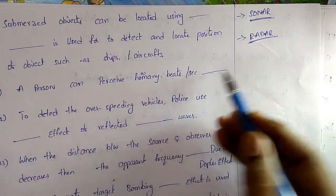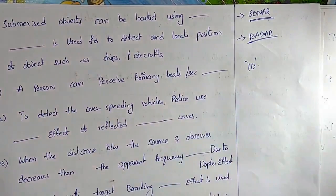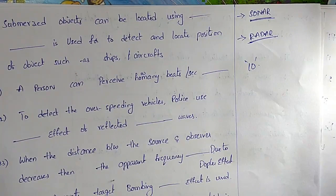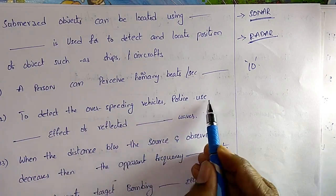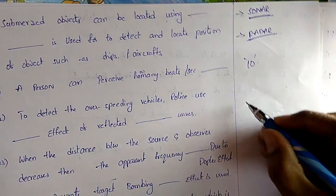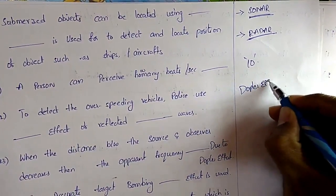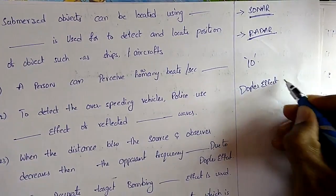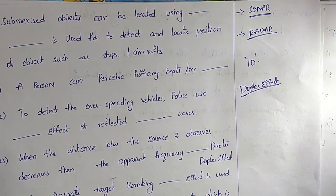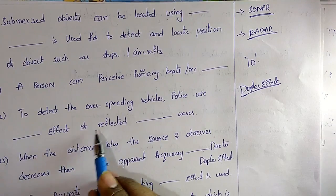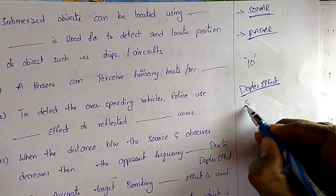Question 21: A person can perceive up to 10 beats per second. Question 22: To detect over-speeding vehicles, police use the Doppler effect — specifically the Doppler effect of reflected short radio waves.